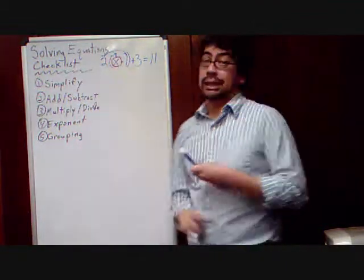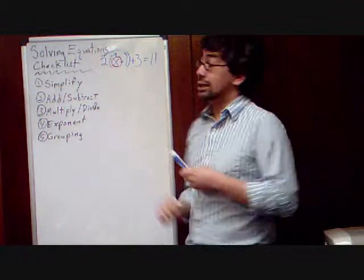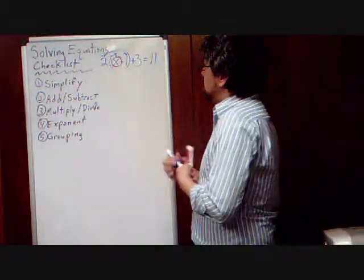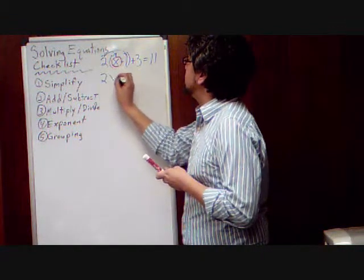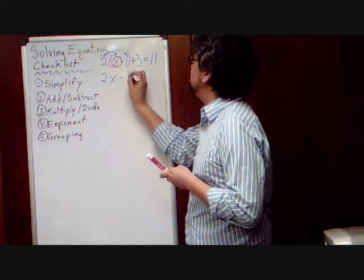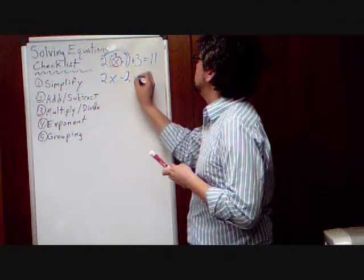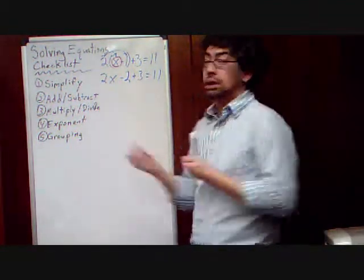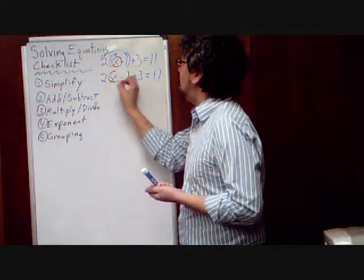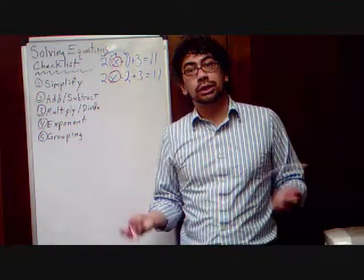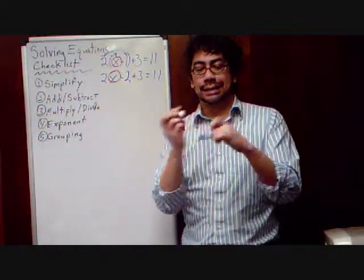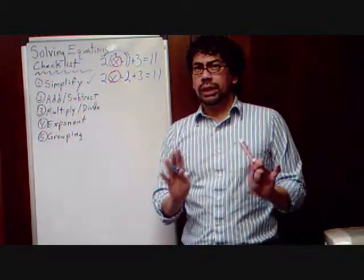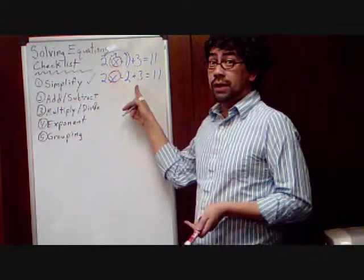We want to isolate x. So, I'm going to circle that so we remember we want x all by itself. So, that distributive property is going to give us 2x minus 2 plus 3 equals 11. Now, again, we're isolating x. So, I'm going to keep on circling it so we remember we're trying to isolate it. So, we did our simplify step. But, wait a minute. Are we done simplifying?